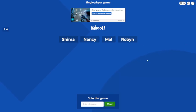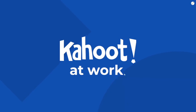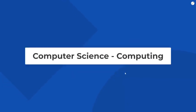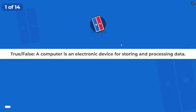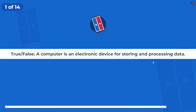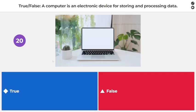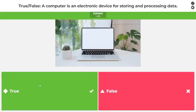Right, so we're ready to do the computer science quiz on computing, and we're going to see how we do at this. Okay, let's go! True or false: a computer is an electronic device for storing and processing data? True. Yeah!